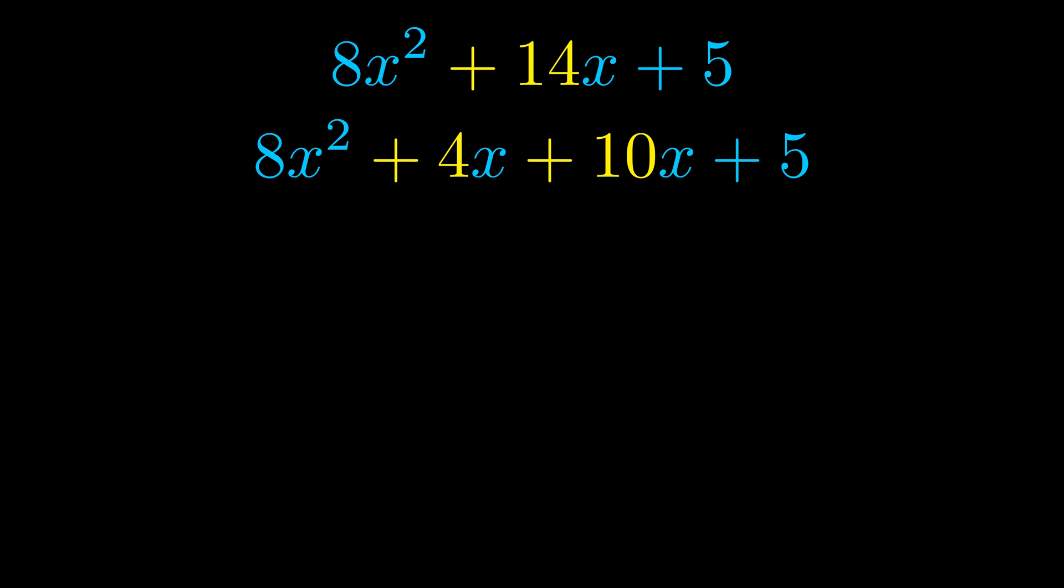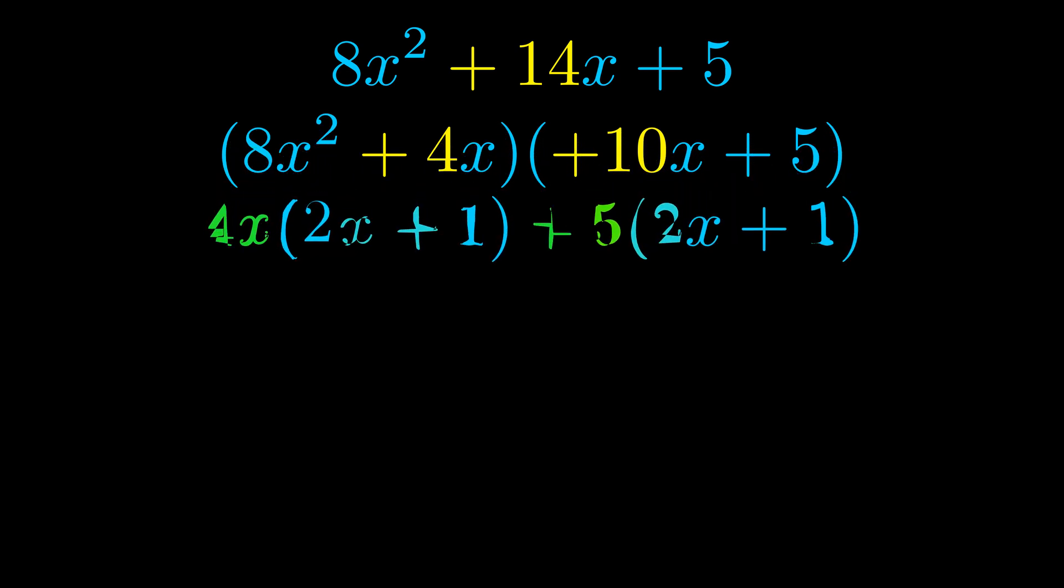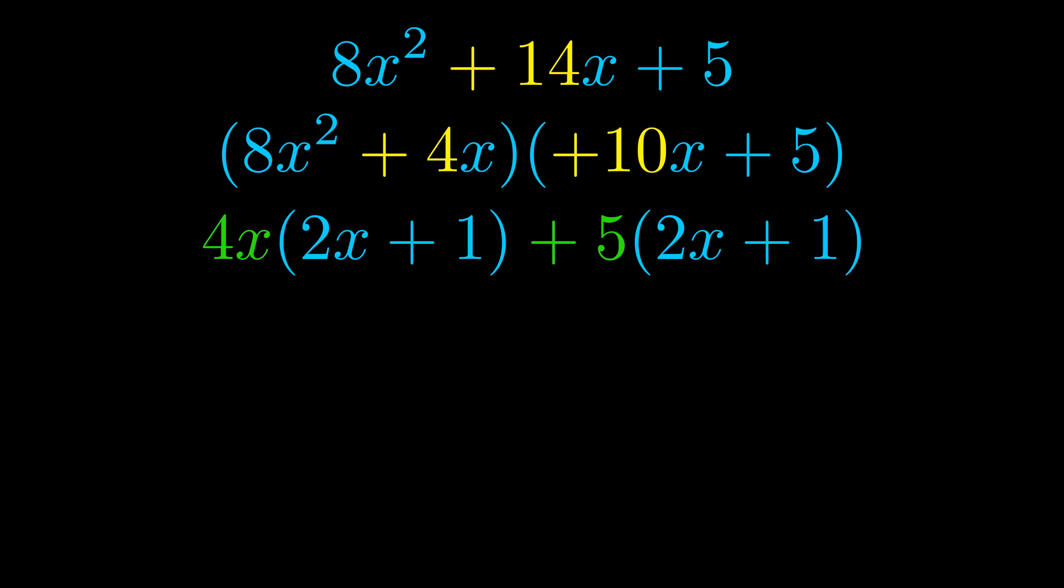Once we've done this we go ahead and we put parentheses around the first term and the last term. And we do that so that we can take the greatest common factor out of both terms. We can see the greatest common factor is now outside in green. Notice also how what remains inside of the parentheses is the same in both cases.